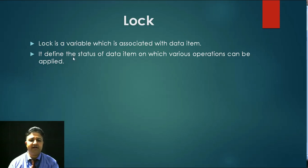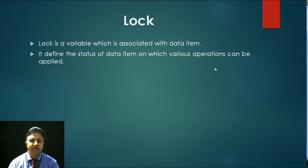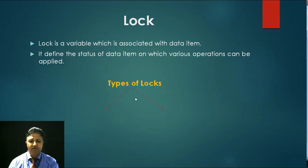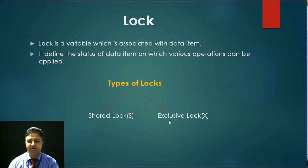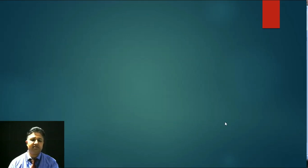A lock may be defined as the status of a data item on which we can perform various operations — we can perform write operations, read operations, or update operations on it. So it defines the status of a data item on which various operations or instructions can be applied. There are two types of locks: number one is called shared lock, represented by S, and number two is called exclusive lock, represented by X.